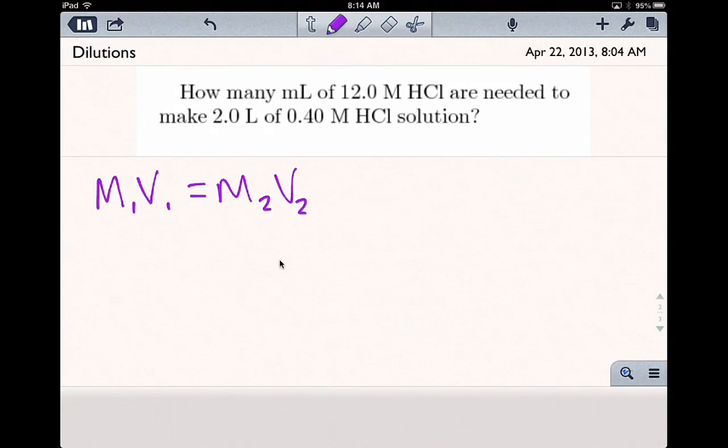M is the molarity or concentration, that's moles per liter, and V is the volume.